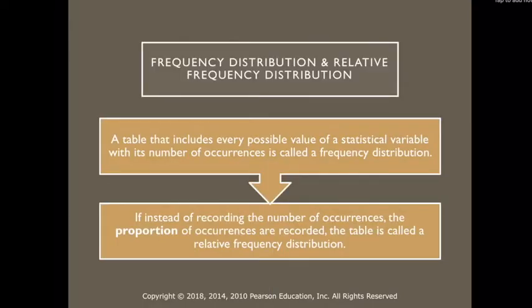So there are two different types of distributions, a frequency distribution and a relative frequency distribution. A table that includes every possible value of a statistical variable with its number of occurrences is called a frequency distribution, and we've made a frequency distribution before.